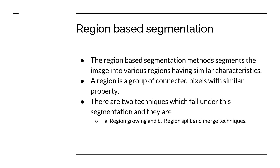What is region based segmentation? I am going to segment the image into various regions which have similar characteristics. A region is nothing but a group of connected pixels which share a similar property. I will identify which pixels have similar properties and group them all as segments. There are two techniques under this: region growing, and region split and merge. This is fundamentally based on grouping regions which have similar characteristics.